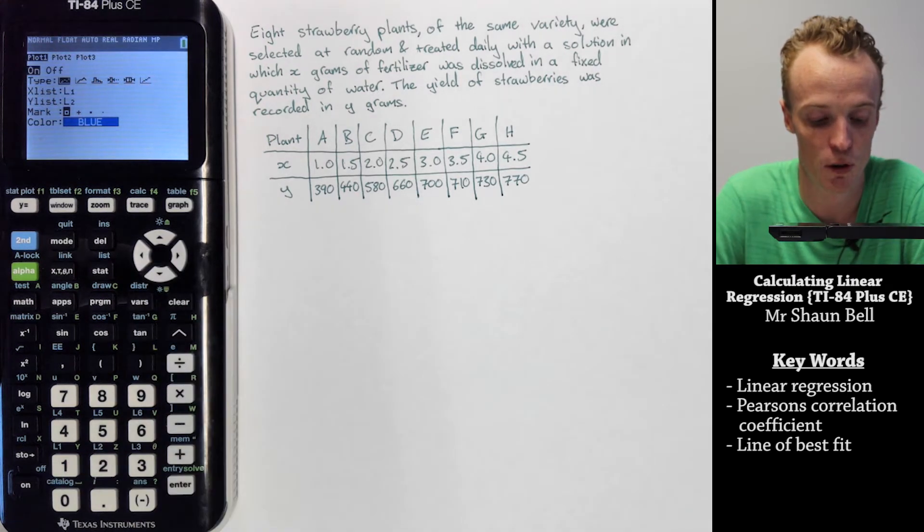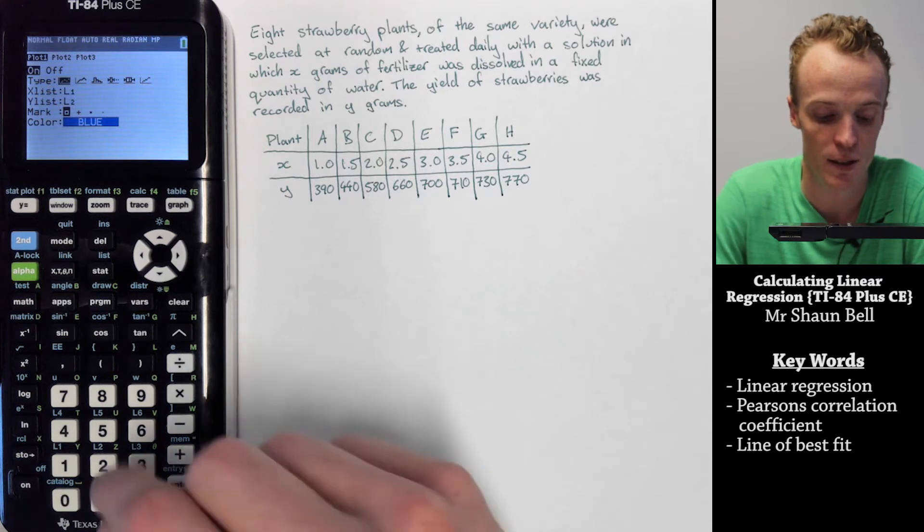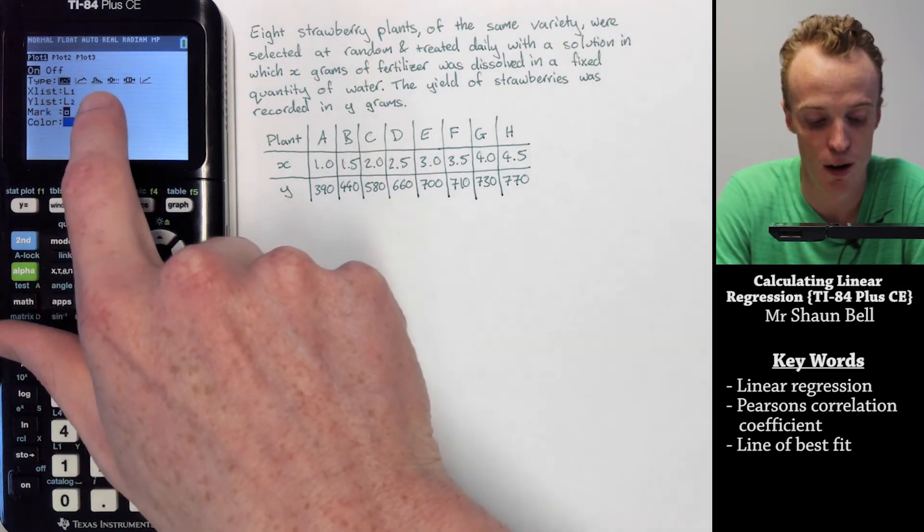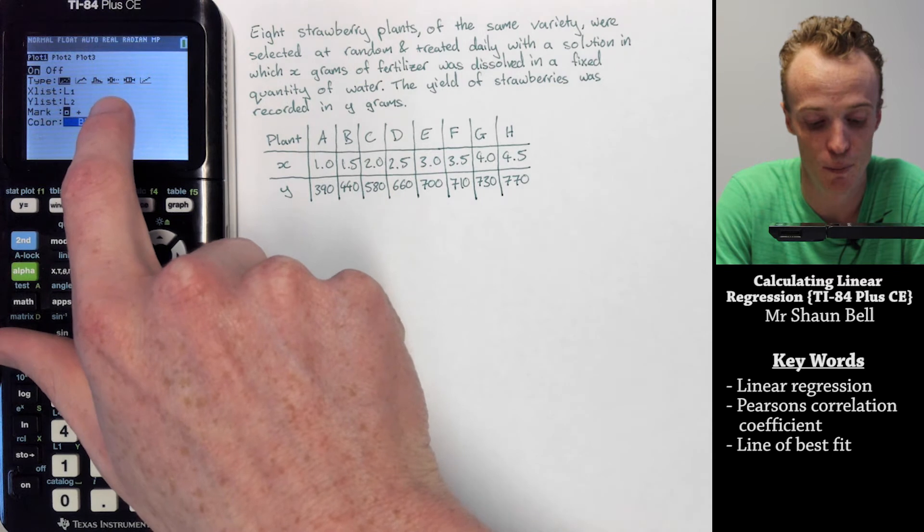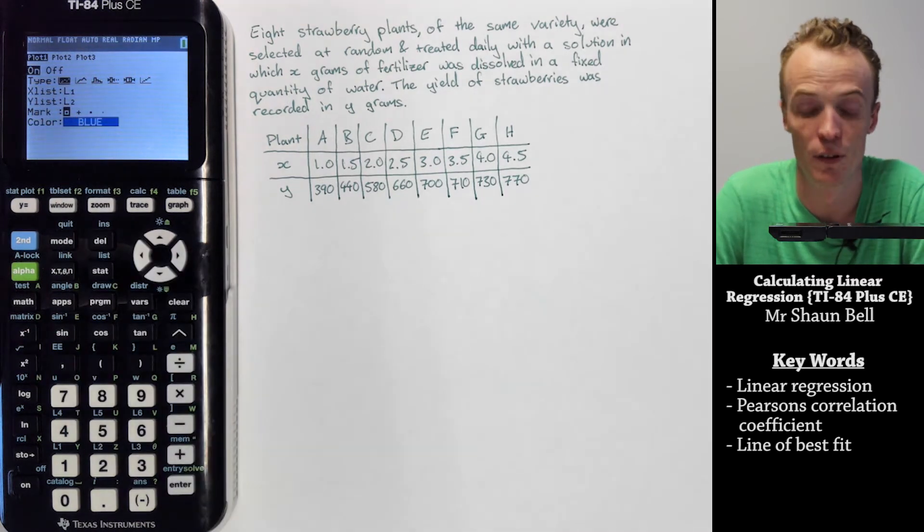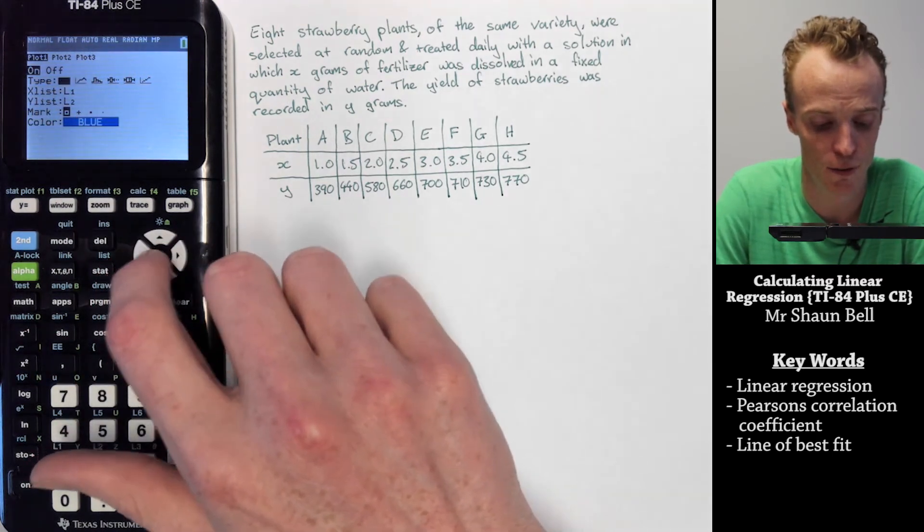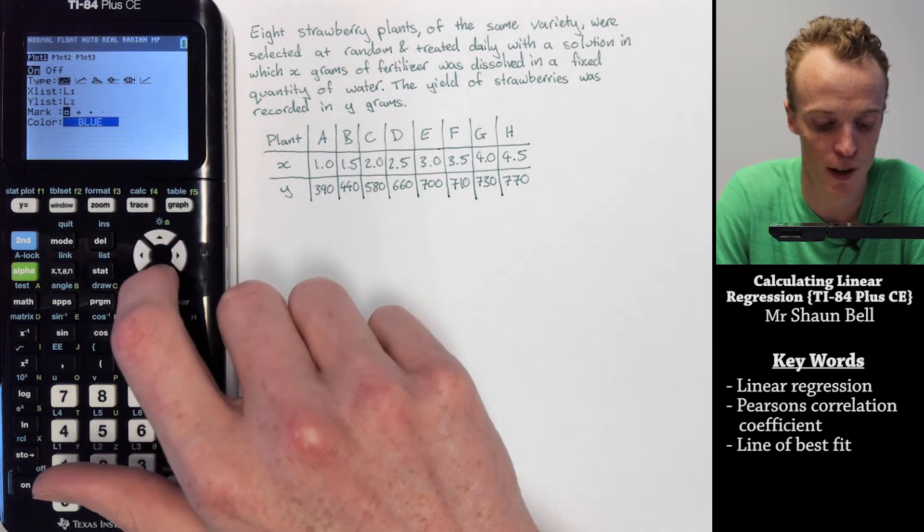From here we need to say what type of graph we want. As you can see, we've got scatterplots, line graphs, bar graphs or histograms, box and whisker plots, etc. I'm wanting to graph this as a scatterplot, so just make sure that that's highlighted.